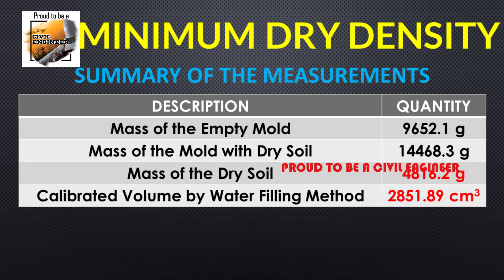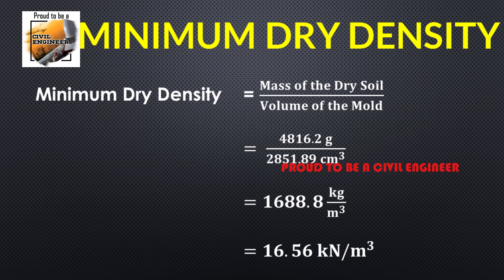The mass of the empty mold is 9,652.1 grams. The mass of the mold with dry soil is 14,468.3 grams. Therefore, the mass of the dry soil is 4,816.2 grams. The calibrated volume of the mold by water-filling method is 2,851.89 cubic centimeters. Minimum dry density is equal to the mass of the dry soil divided by the volume of the mold. The minimum dry density of the soil is calculated as 1,688.8 kilograms per cubic meter, which is 16.56 kilonewtons per cubic meter.